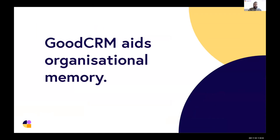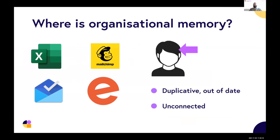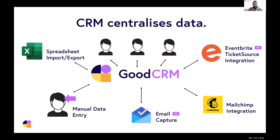I want to talk about why people might want a CRM, and the first thing I want to talk about is organisational memory. We're talking about all of that valuable information that we collect about our organisation, its contacts and activities. This data often sits in silos — spreadsheets, inboxes, software — and a lot of it gets carried around in people's heads. There tend to be lots of different versions of the same data, some of it's out of date, it's not connected, and information in people's heads is often hard to access if someone's ill, and often leaves the organisation with that person.